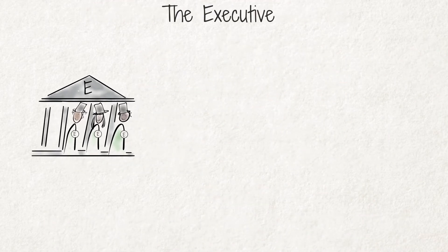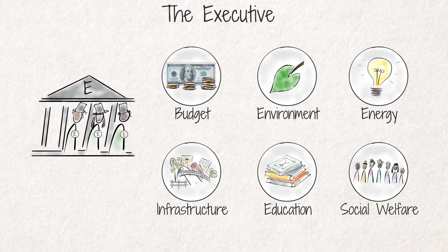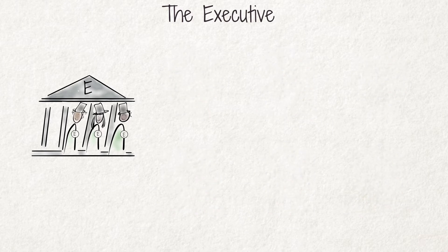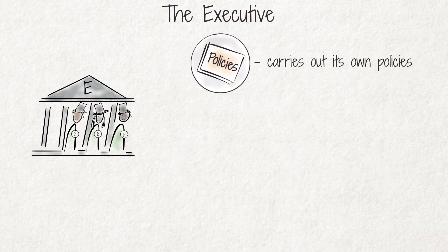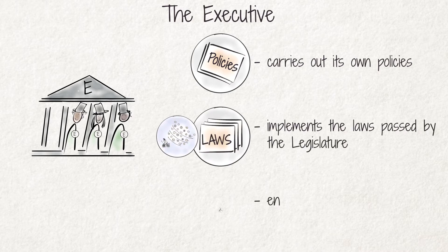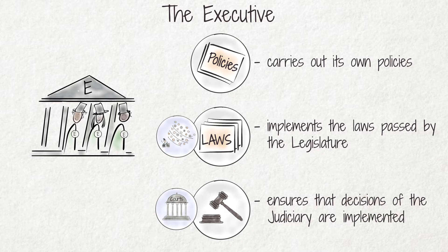The executive branch of government is responsible for the daily administration of a country. That is why we often refer to the executive as the government. It carries out its own policies, implements laws passed by the legislature, and ensures that decisions of the judiciary are implemented.